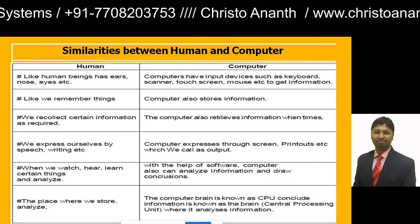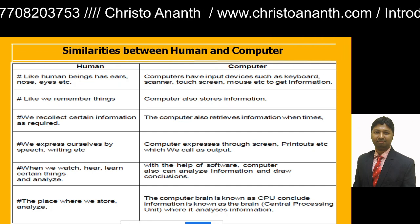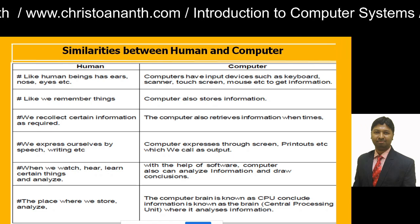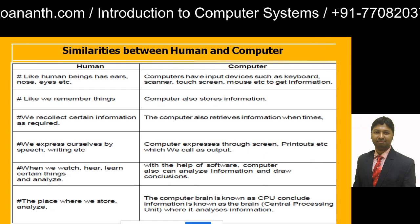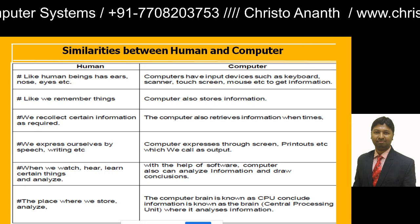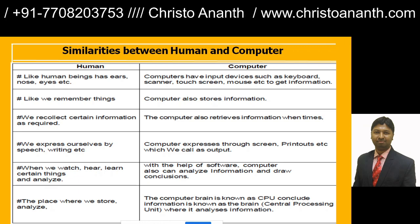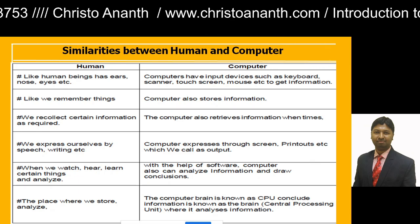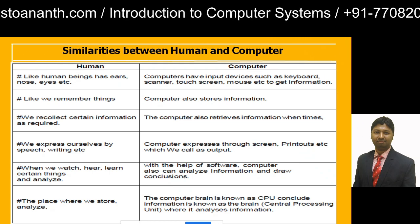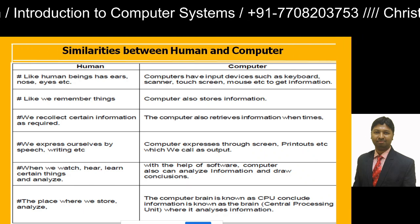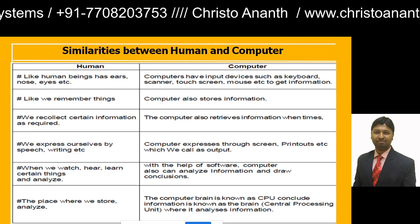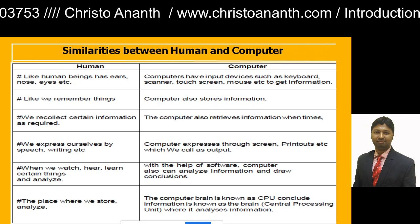Just as we remember things, a computer stores information using storage devices like magnetic disks, magnetic tapes, or hard disks and retrieves information as required. We express ourselves through speech and writing, while a computer expresses through the screen and digital software output tools, producing printouts. Just as we watch, hear, learn, and analyze, a computer can analyze information and draw conclusions with the help of various software, applications, and tools.